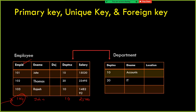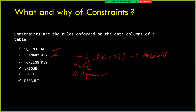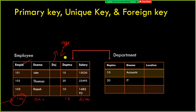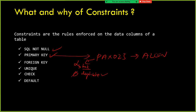NOT NULL means columns like age of the employee or date of joining should have values and should not be blank. Using primary key you can uniquely identify records. For example, in the same department two employees have the same name, but based on the employee ID we can uniquely identify a specific person or specific instance.